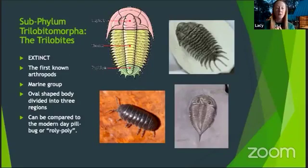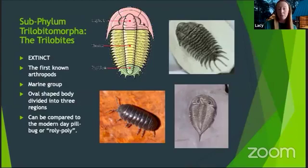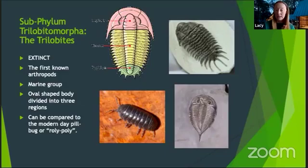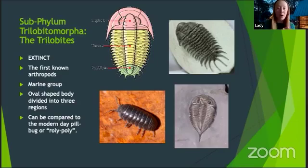Subphylum Trilobitamorpha - the trilobites - are extinct and no longer on planet Earth. They are the first known arthropods, and their bodies are oval-shaped and segmented into three parts: the cephalon (the head), the thorax, and the pygidium. This is an extinct group, but roly polies or pill bugs are always compared to them because of their shape. Roly polies are fun because they don't bite when you pick them up - they just get scared and roll into a little ball.